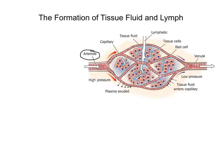The blood then leaves via the venule and goes back into the venous system. Within this capillary network we've got shaded blue regions of tissue fluid, and running through that something called the lymphatic vessel. So we need to consider what this tissue fluid is and how it relates to this lymphatic vessel.